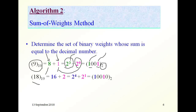Another example: 18 in base 10 is equal to 16 plus 2. 16 is 2 to the power of 4, and 2 is 2 to the power of 1. So in position 1, where the weight is 1, we put a 1, and where the weight is 4 we also put a 1. The rest are 0. This is position 0, position 1, 2, 3, and 4.